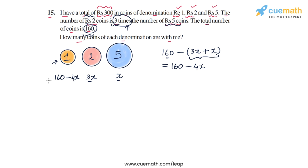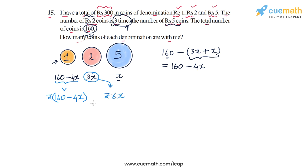Now let's write the rupee values of each denomination. I have (160 − 4x) coins of rupees 1, so their value is (160 − 4x) rupees. I have 3x coins of rupees 2, so their value is 6x rupees. I have x coins of rupees 5, so their value is 5x rupees.